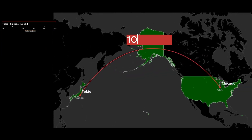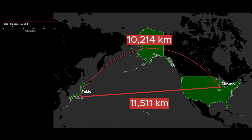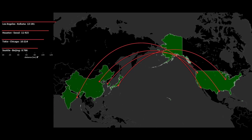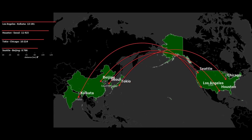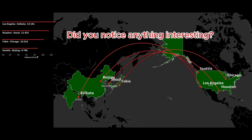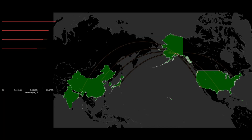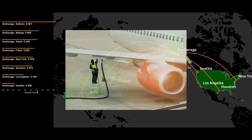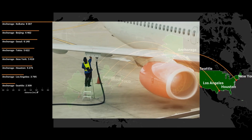Let's look at the shortest distance between Tokyo and Chicago. It would seem that this line should go straight through somewhere between Hawaii and Alaska, but due to the elliptical shape of our planet, this line will be longer by about 15%. Here are some more routes between Asian and American huge cities. Did you notice anything interesting? Yes — they all intersect or pass near the city of Anchorage in Alaska. Anchorage can be called a real hub for air travel. Trading companies use the Anchorage airport to refuel their planes, which increases the amount of cargo transported per flight.